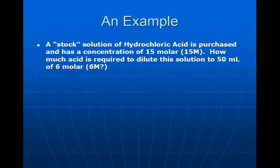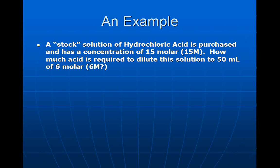So, an example using this. A stock solution—now, a stock solution is what I talked about before. When we buy something like hydrochloric acid, nitric acid, or even a base, they are of a very, very high concentration, and we're going to dilute that down and water it down. So, a stock solution of hydrochloric acid is purchased and has a concentration of 15 molar, represented as 15 capital M. How much acid is required to dilute this solution into 50 milliliters of 6 molar?